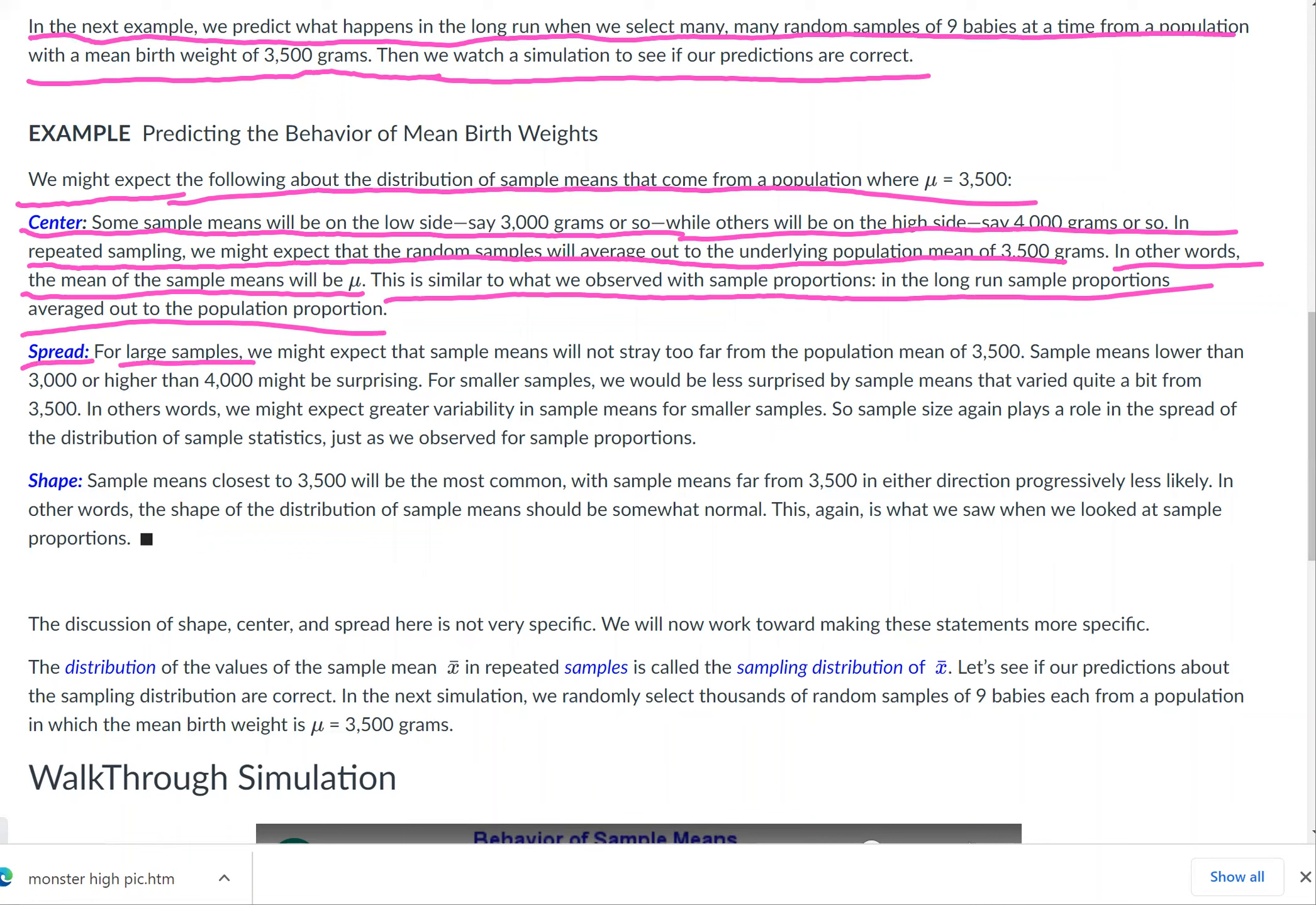The spread: for large samples, we might expect the sample means will not stray far from the population mean of 3,500. Sample means lower than 3,000 or higher than 4,000 might be surprising. For smaller samples, we would be less surprised by sample means that varied quite a bit from 3,500.